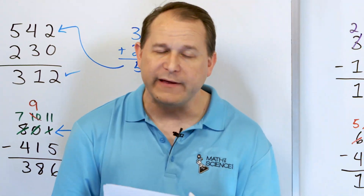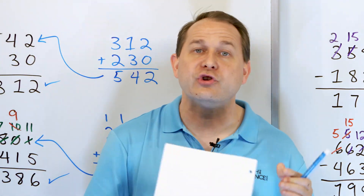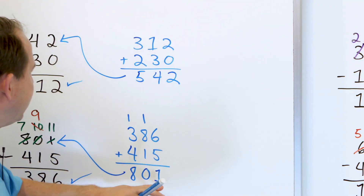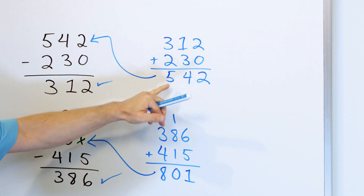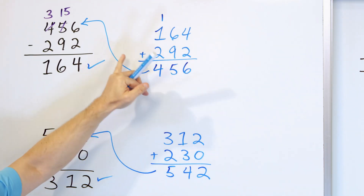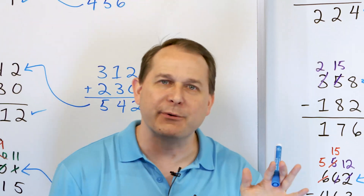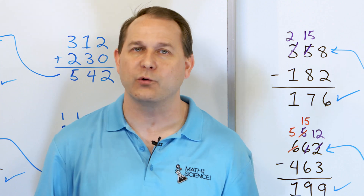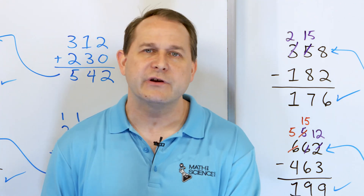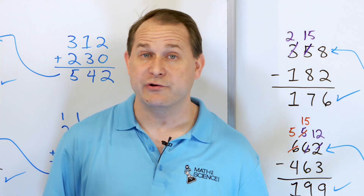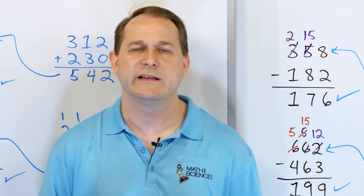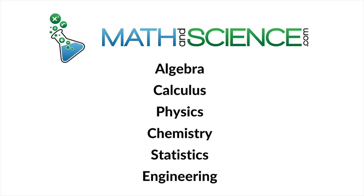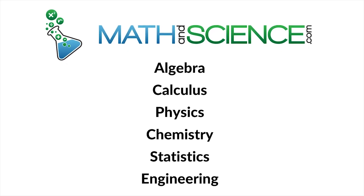By now you should know that when you're doing a subtraction problem, you can always check the answer by adding back in. Every time we added back in, we got a number that matched our problem. If you get a number when you're checking that doesn't match the problem, then you made a mistake somewhere and you have to check all of your work. Make sure you can do all of these problems, check them, make sure you're getting the correct answers, and then follow me on to the next lesson for more practice with checking subtraction problems. Learn anything at mathandscience.com.